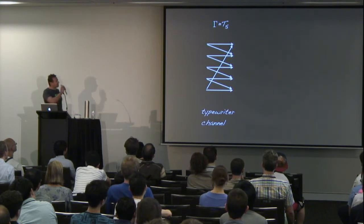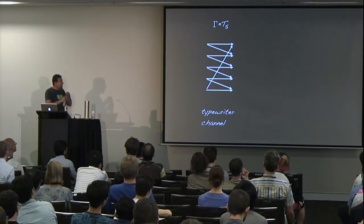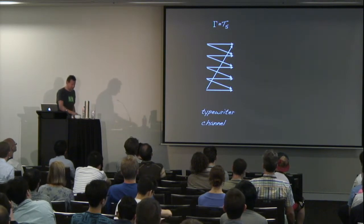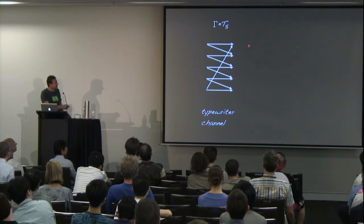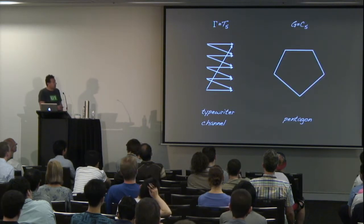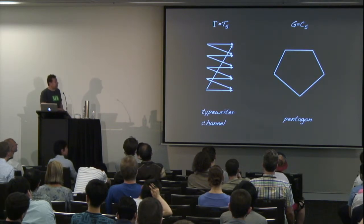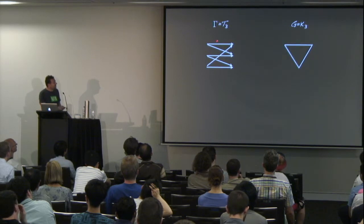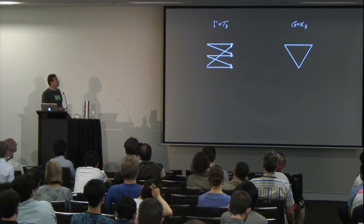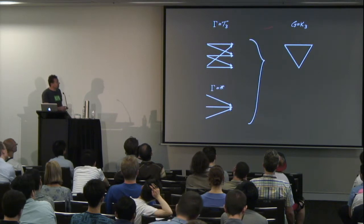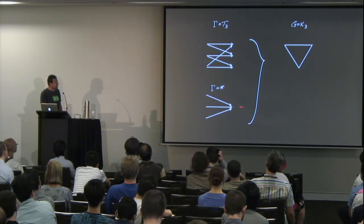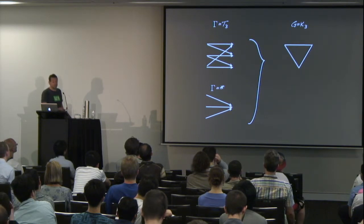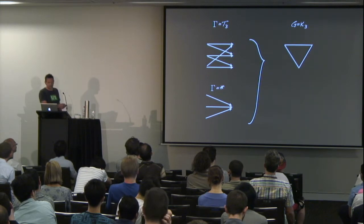Here's an example from Shannon's paper — the typewriter channel — with five input symbols and five output symbols. The errors show the possible transitions and visualize the transition graph. The corresponding confusability graph is a five-cycle or pentagon. An even simpler example with three symbols gives the complete graph K3, where every symbol is confusable with everyone else. Interestingly, a trivial channel that maps everything to the same point has the same confusability graph, so the transition graph still carries more information.